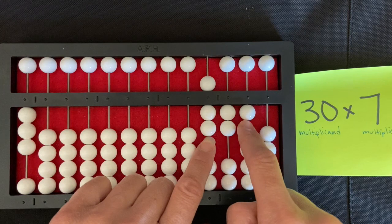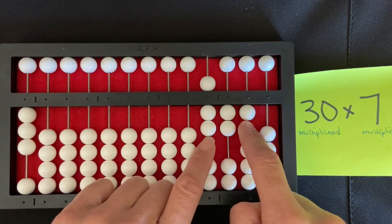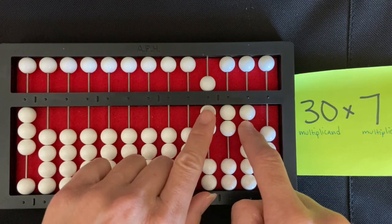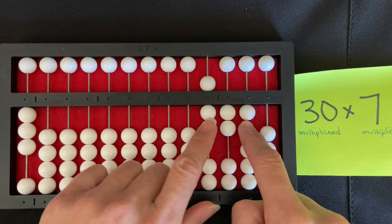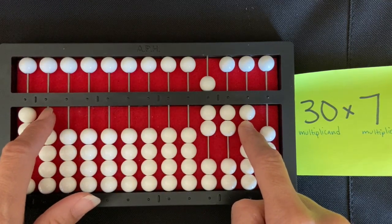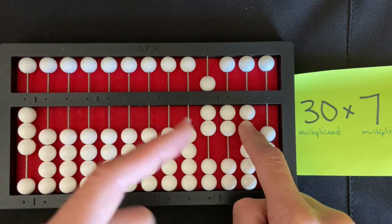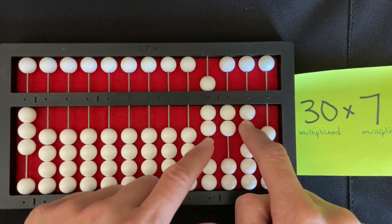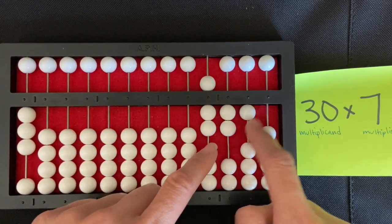Now I'm leaving my finger in the tens rod, but I'm thinking this is right here. I'm thinking that this is seven times zero. I still haven't done that yet. Seven times zero, and I know that's zero. Anything times zero is zero, so I have zero, zero.